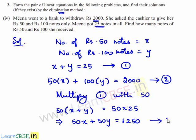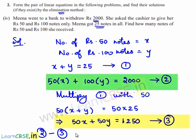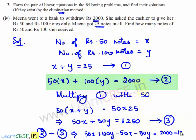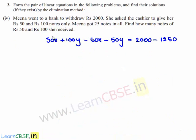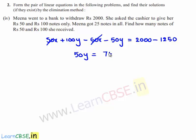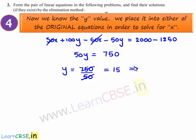Assume this as equation number 3. Now, equation 2 minus equation 3 gives: 50x plus 100y minus 50x minus 50y is equal to 2000 minus 1250. So 50y is equal to 750, which means y is equal to 750 divided by 50, giving y equal to 15.